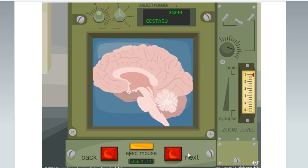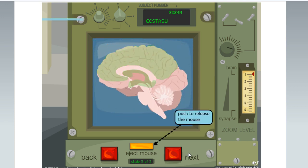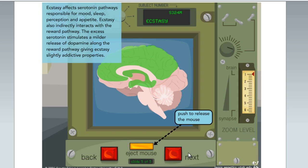Ecstasy affects serotonin pathways responsible for mood, sleep, perception, and appetite. Ecstasy also indirectly interacts with the reward pathway. The excess serotonin stimulates a milder release of dopamine along the reward pathway, giving ecstasy slightly addictive properties.